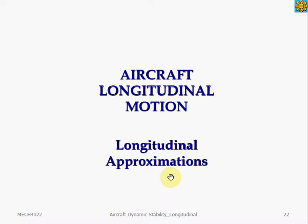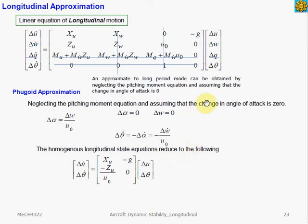In other words, we want to find the two-degree-of-freedom approximation for the Phugoid mode and a two-degree-of-freedom approximation for short period mode. The approximate equations would essentially give us more insights on the stability parameters and derivatives that influence motion. We will write the two-degree-of-freedom Phugoid, or long period, approximation. We start by looking at the three-degree-of-freedom longitudinal equation and will derive our approximate equation from that.